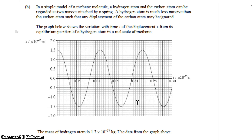Part B, we're told about a simple model of a methane molecule where a hydrogen atom and the carbon atom can be regarded as two masses attached by a spring. So we have a spring oscillator. The hydrogen atom is much less massive than the carbon atom, such that any displacement of the carbon atom may be ignored.